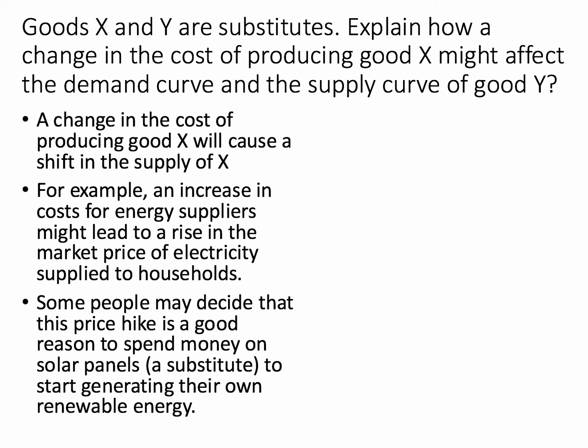A change in the cost of using good X will cause a shift in the supply of good X. Take for example an increase in the global price of energy, which causes an increase in the market price of electricity supplied to households. Maybe the price of oil has gone up and oil-powered power stations see their costs increase. That will cause an inward shift of supply for electricity, causing the market price to go up.